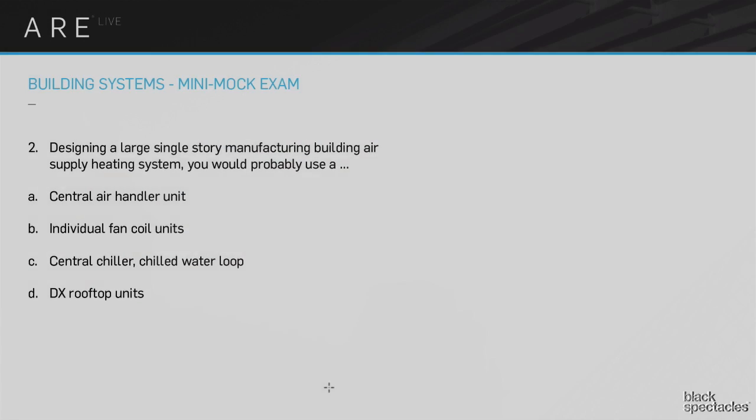Number two is essentially the same question but for a different scenario. Designing a large single-story manufacturing building for the air supply, you would probably use a... and then pretty much the same answers: central air handling unit, individual fan coil units, central chiller chilled water loop, DX rooftop units.